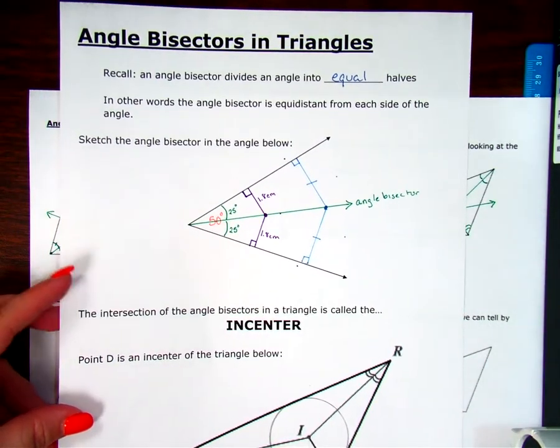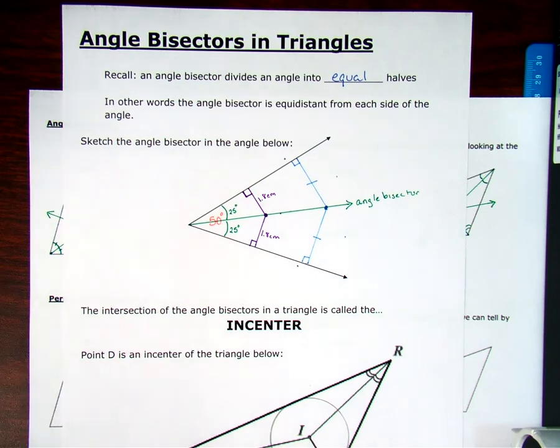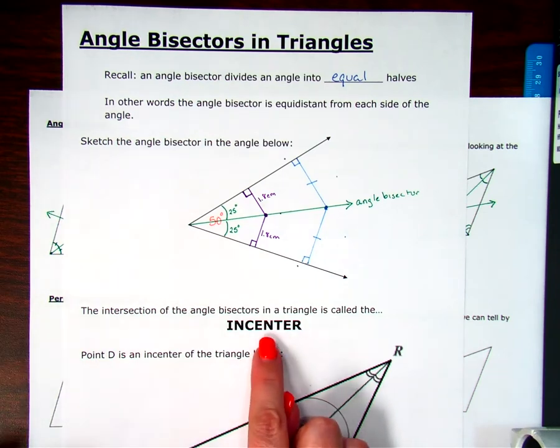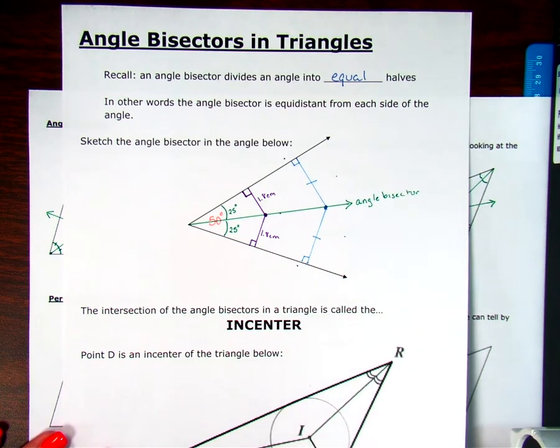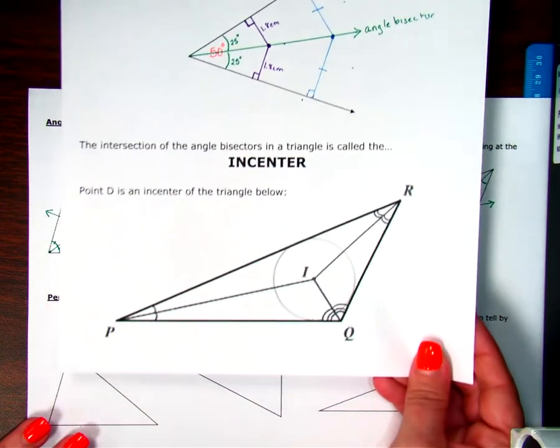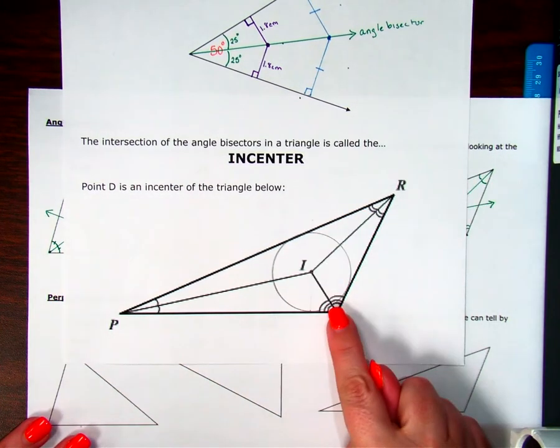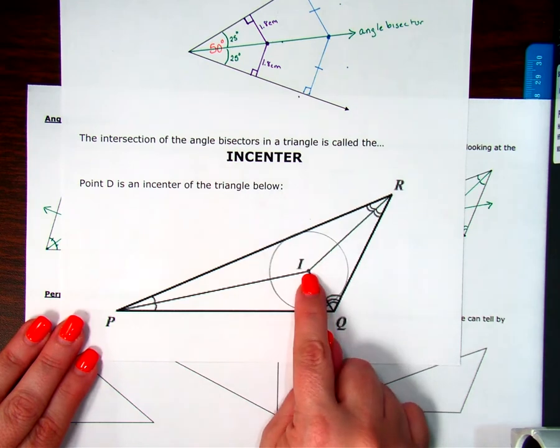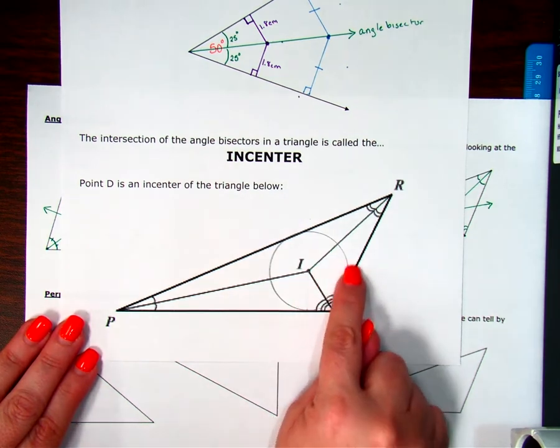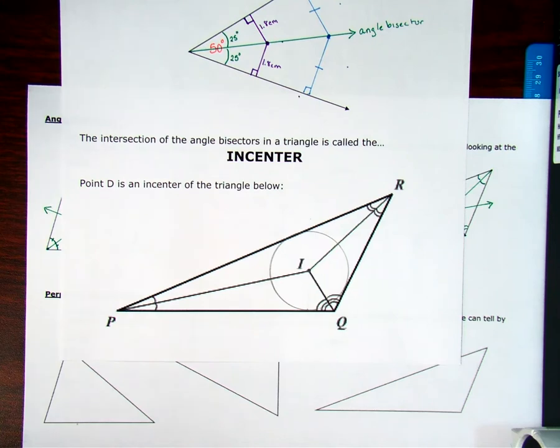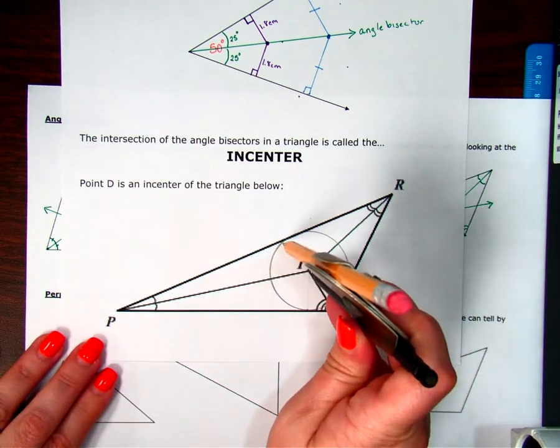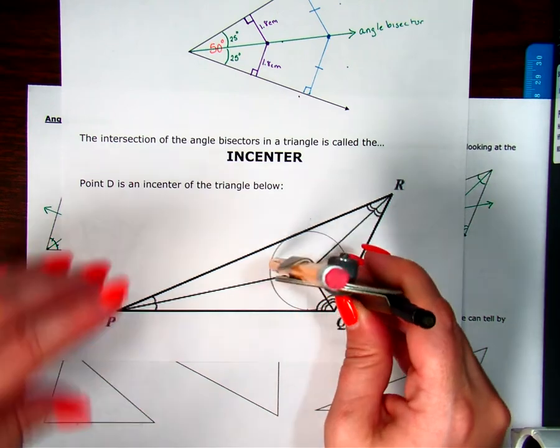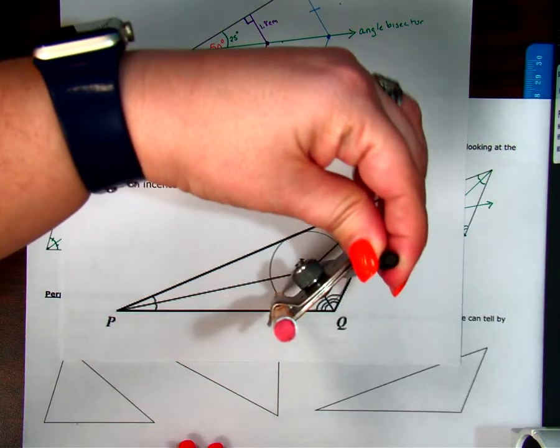And the reason we call that the incenter of the triangle is because it is the center of a circle that is what we call inscribed inside a circle. So when I look down here, notice I have my angles bisected and I have them coming out and then I stopped them at the intersection. I didn't keep them going like I did on the others. Notice how the circle that I used this compass,